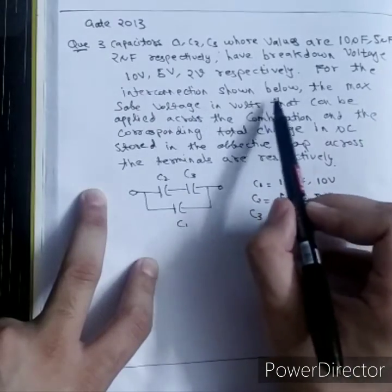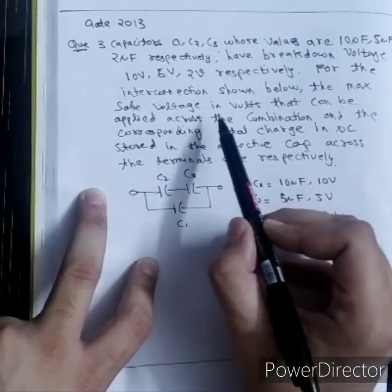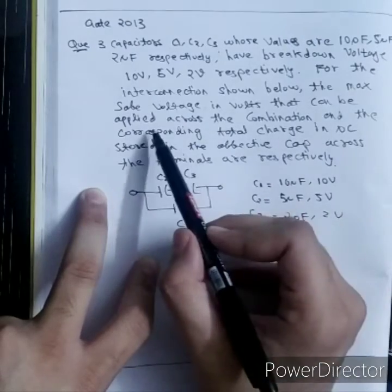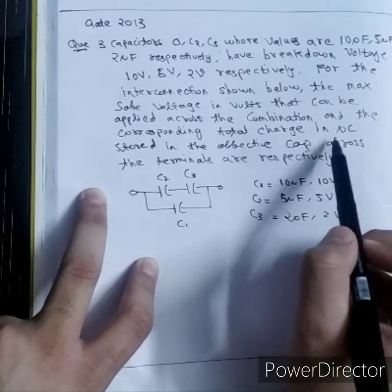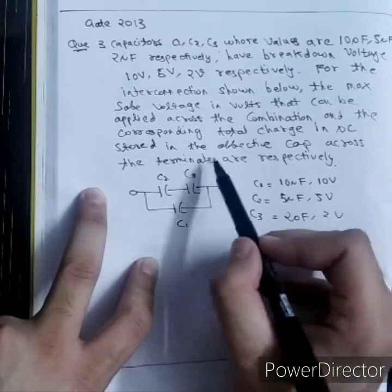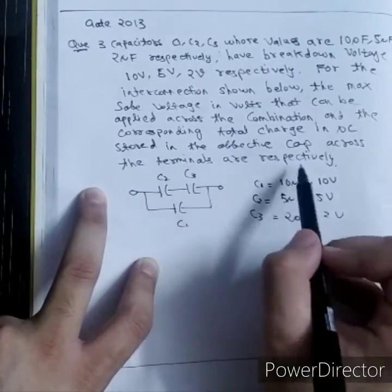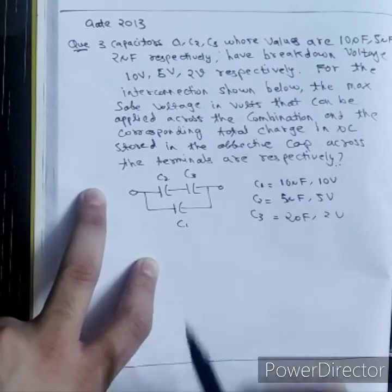For the interconnection shown below, the maximum safe voltage in volts that can be applied across the combination and the corresponding total charge in micro coulombs stored in the effective capacitor across the terminals are respectively.